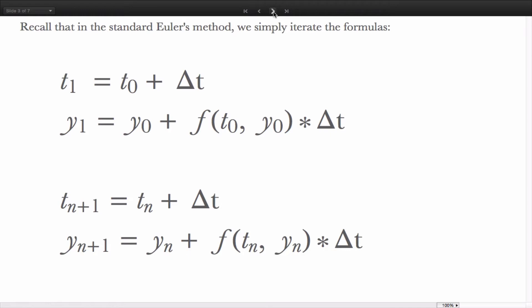Recall from the previous video that in the standard Euler's method, we partition the t-axis as such, and the next y value is predicted as the previous value plus some change in y, which is given as the slope function evaluated at the beginning of the interval times delta t. And we continue to iterate these two expressions to derive our numerical solution.